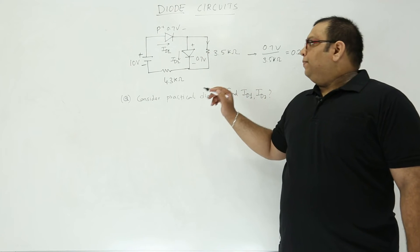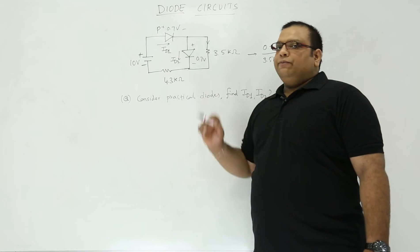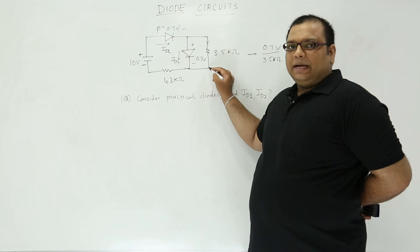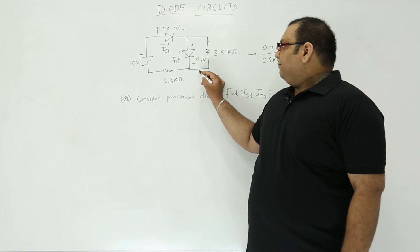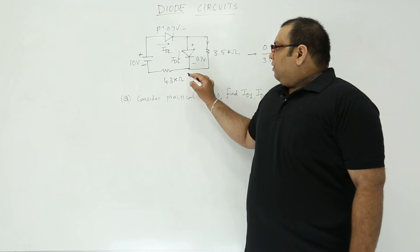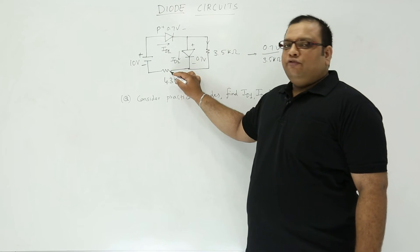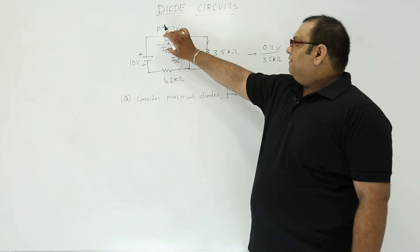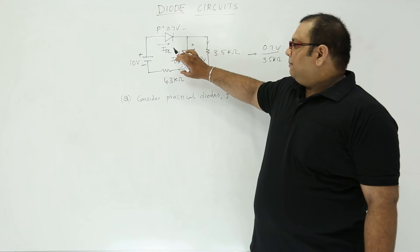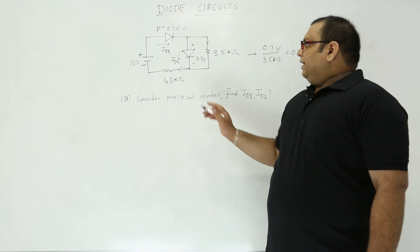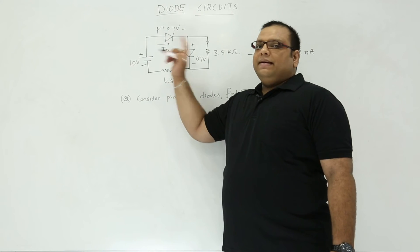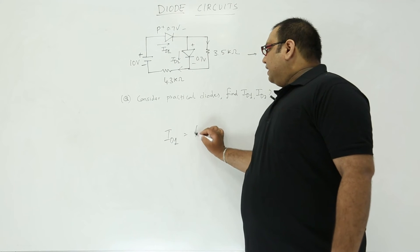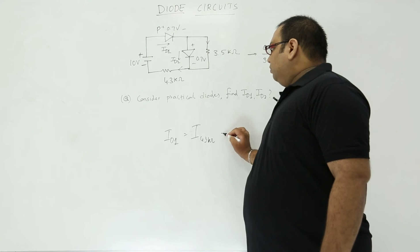Now we got the current in this direction. We need to find ID1 and ID2. If you observe, ID1 is getting divided into two: ID2 as well as the current in the 3.5 kΩ resistor. The sum of these currents will enter into the 4.3 kΩ resistor. So the current in the 4.3 kΩ is the same as ID1, since ID1 splits and then recombines.